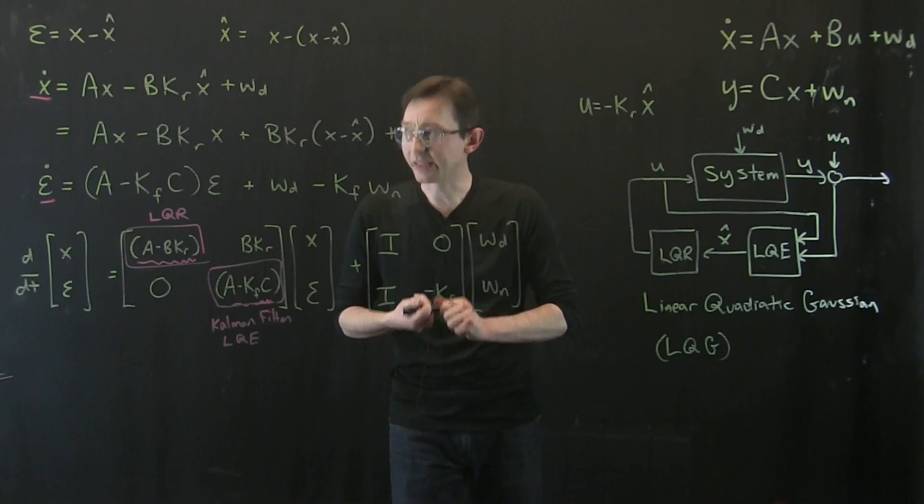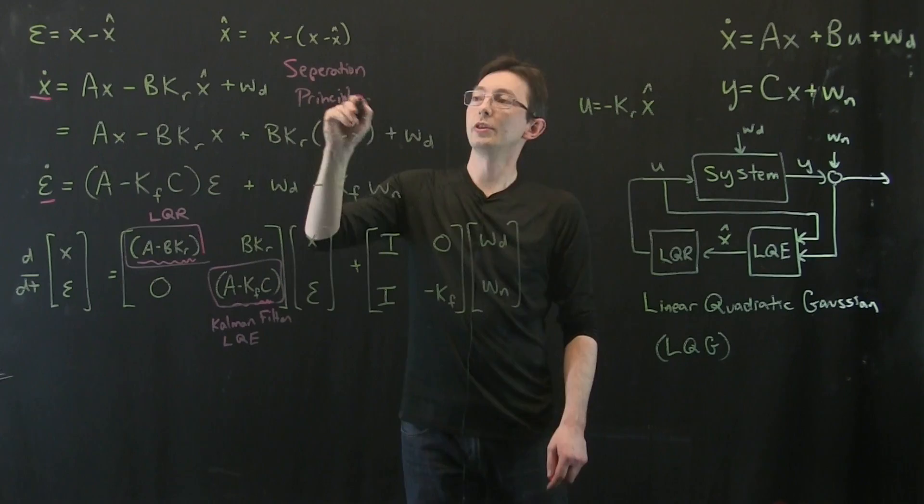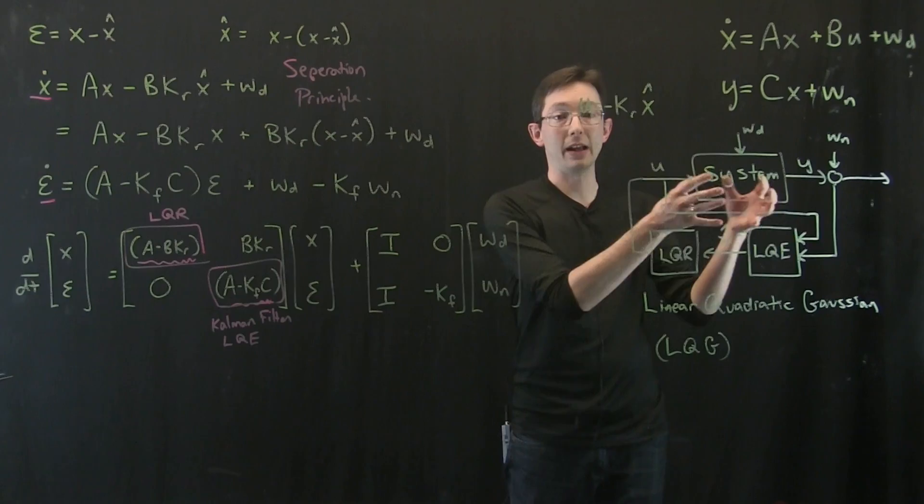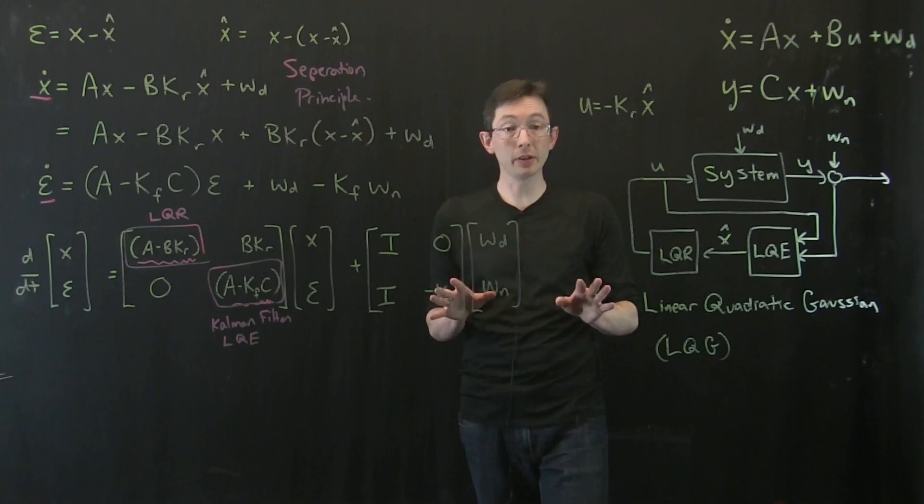And so in control theory, this is called the separation principle. The separation principle. Which essentially means I can design my LQR and my LQE controllers and estimators in isolation separately. And when I combine them, the combined system retains the desirable properties of each of them. This is really, really cool. It just works out because of the linear algebra.